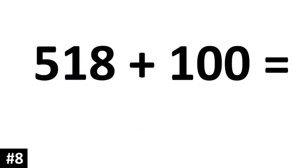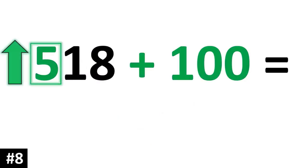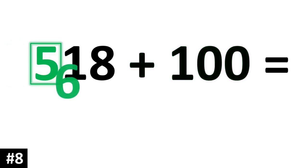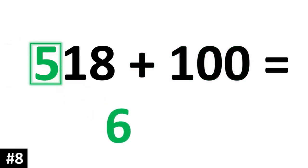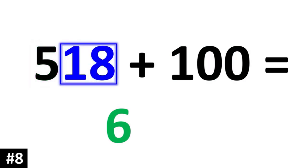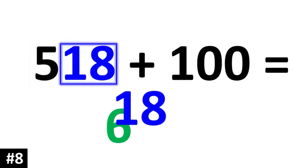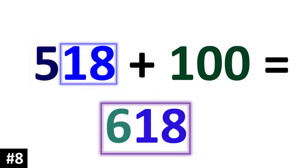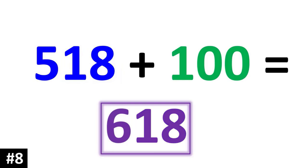518 plus 100. The 5, which is the hundreds digit, is going to go up to 6. The other numbers stay the same, so we bring down the 18: 618.